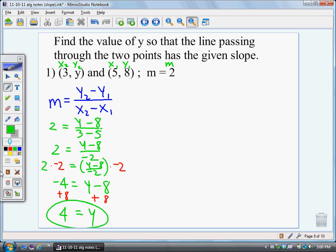If you had the points 3, 4 and 5, 8, that slope would be 2. So that's one way you can do it.